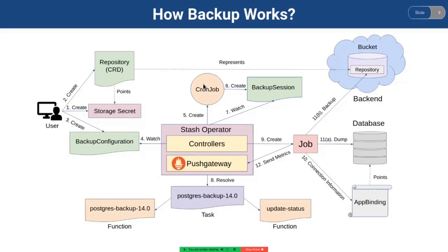On the next scheduled slot, the cron job triggers a backup session. The Stash operator watches for the backup session. When it finds the backup session object, it resolves the respective task and function and prepares the job definition to backup.